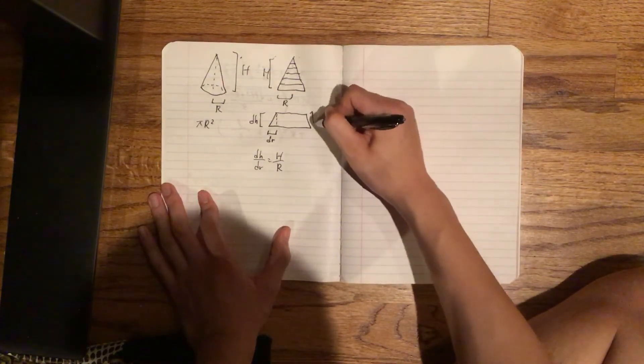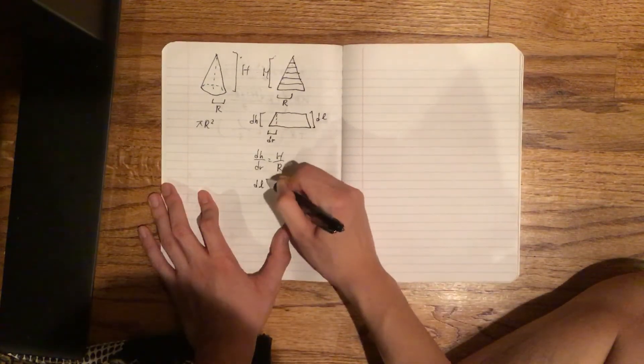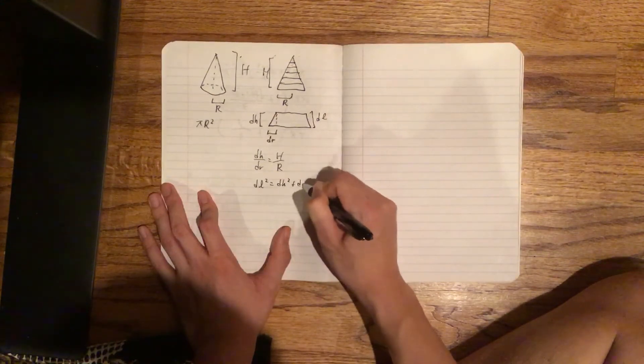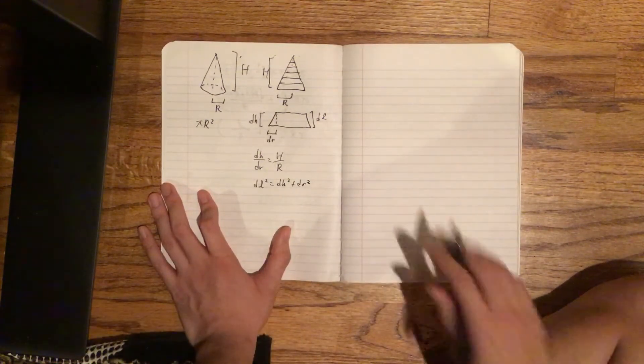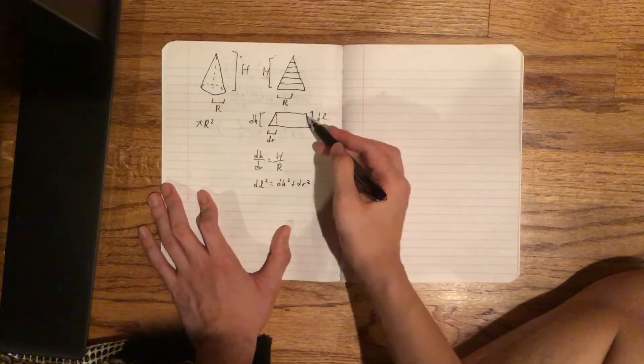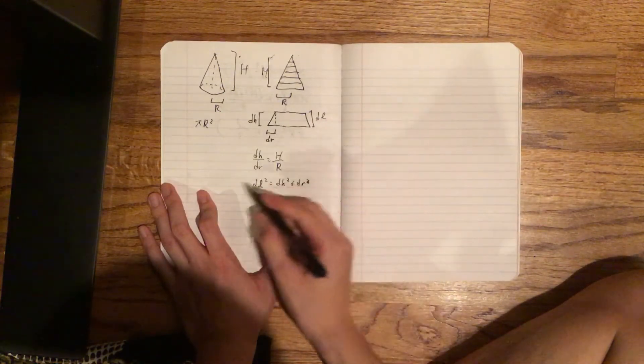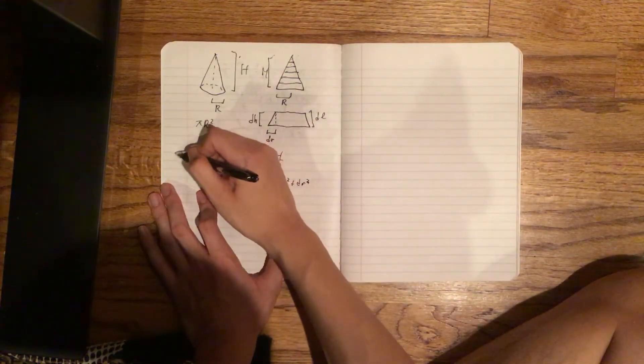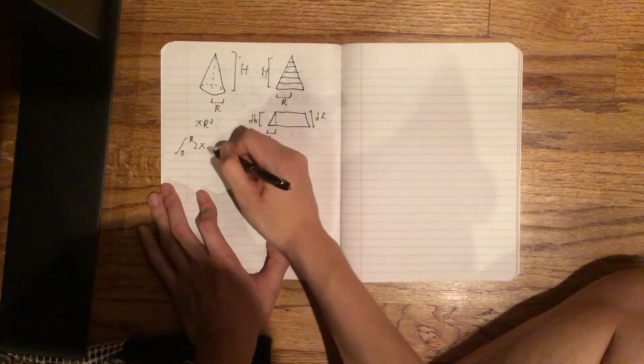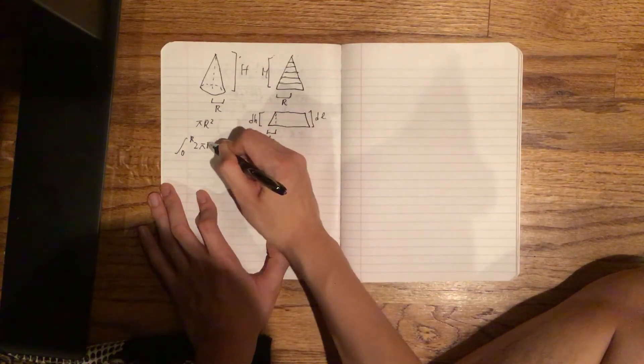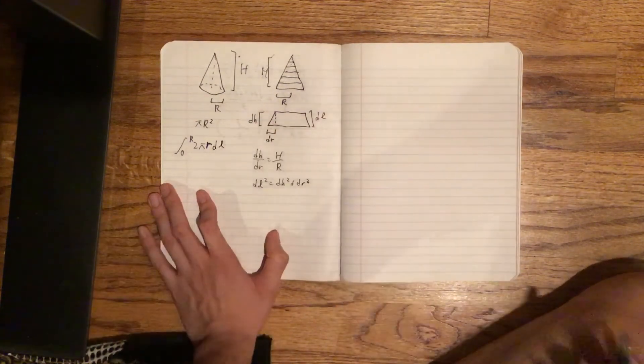And I want to define something new. Let's call this dl. So dl² = dh² + dr² by Pythagorean's Theorem. And so basically what we're gonna do is we're gonna sum the surface area of these little tiny disk shapes. We're gonna take an integral from 0 to r of 2πr times dl.